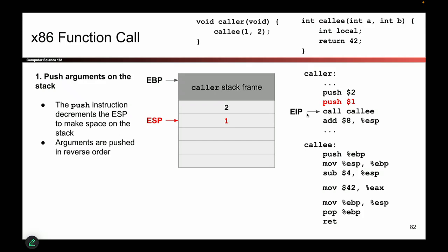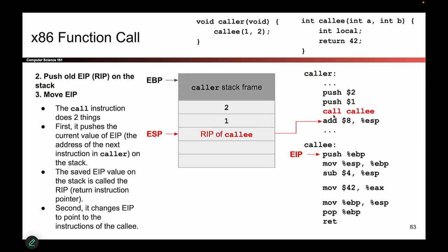Only after I save the old value can I change EIP to point into callee. So the next instruction pushes a value onto the stack — this value tells us what used to be in EIP. Another way of thinking about it: when I'm done with this callee function, go back here. This is where you left off — it's like a bookmark. So when I'm done with callee, go back here and start executing again.